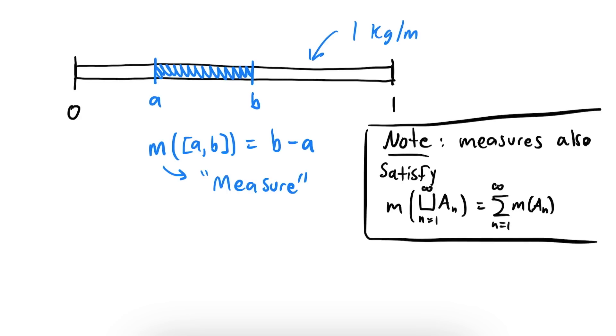The example I just described, where a uniform density of 1 kg per meter is assigned to the real numbers, is called the Lebesgue measure, and it's probably the most important measure out there. We can also think of other types of measures. For example, if you assign a mass of 1 to the point 0, and a mass of 0 to everything else, you get what's called the Dirac measure.